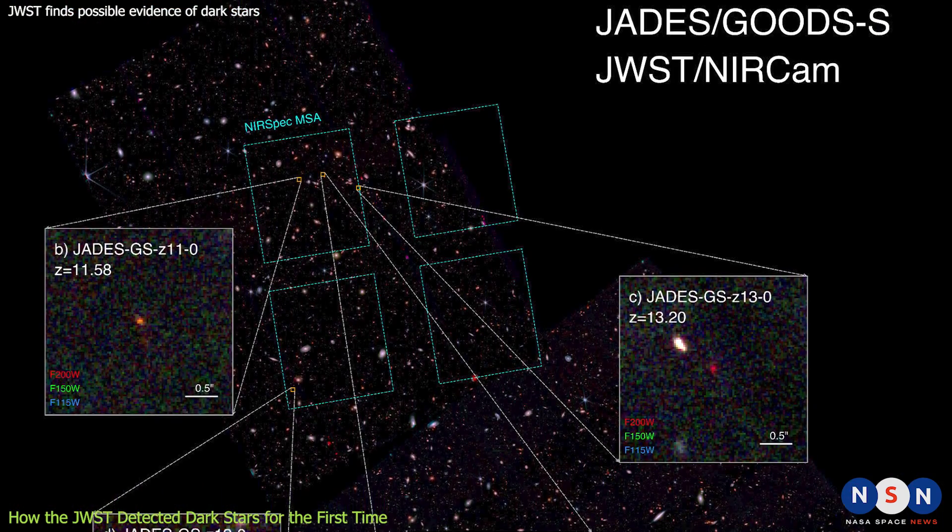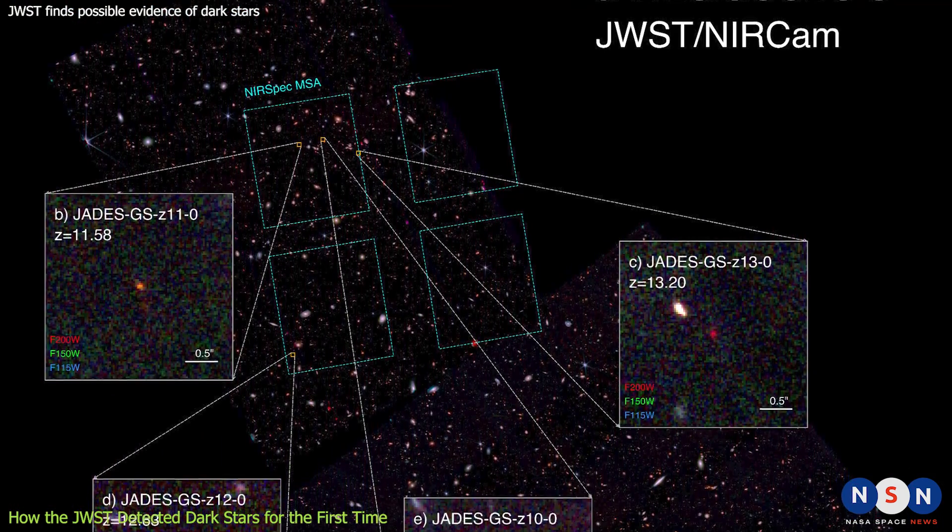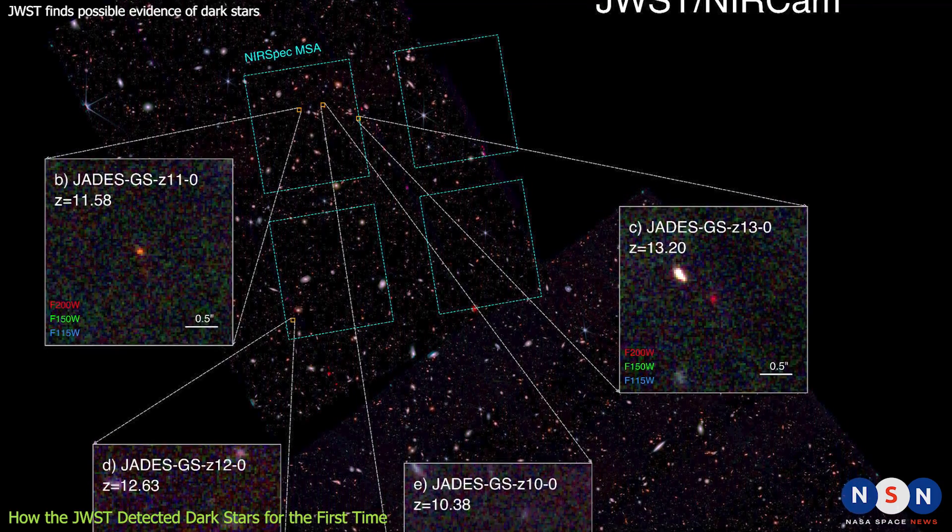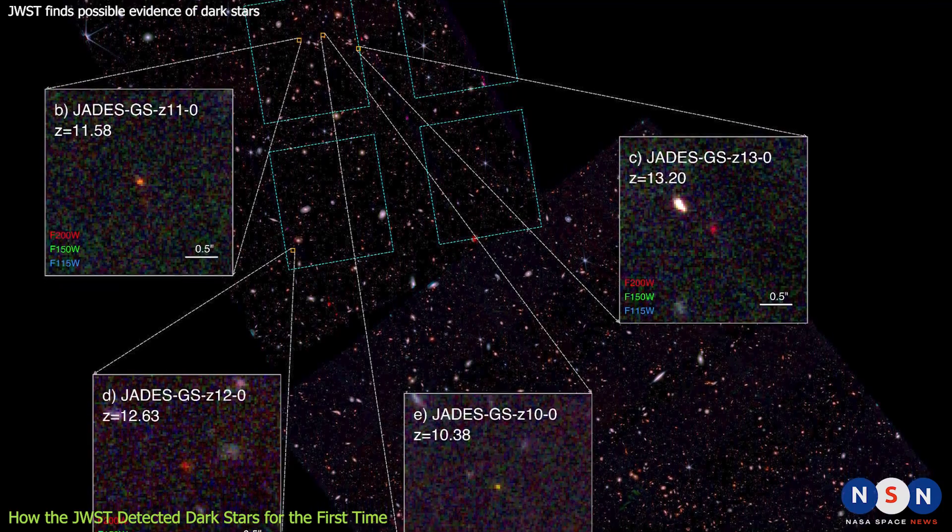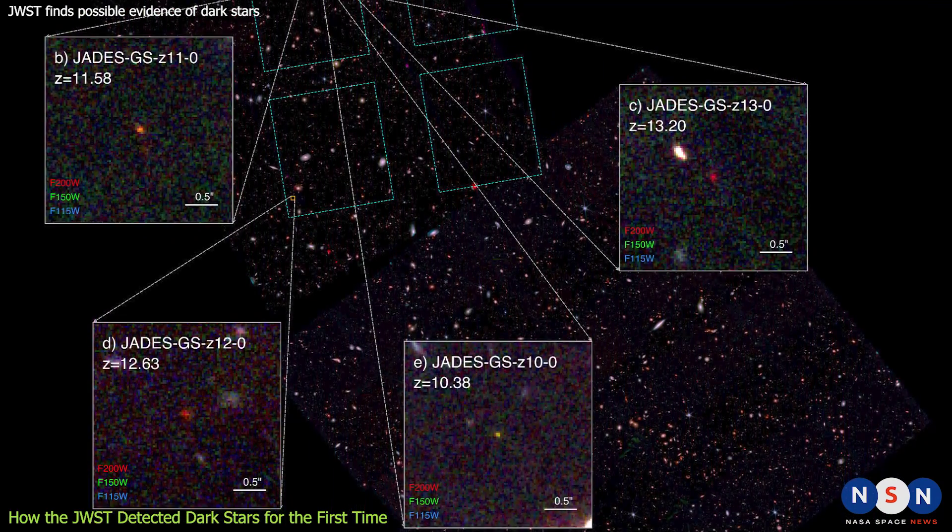The team scanned hundreds of globular clusters and found several candidates for dark stars. They then followed up with more detailed observations to confirm their nature. They were amazed by what they saw.